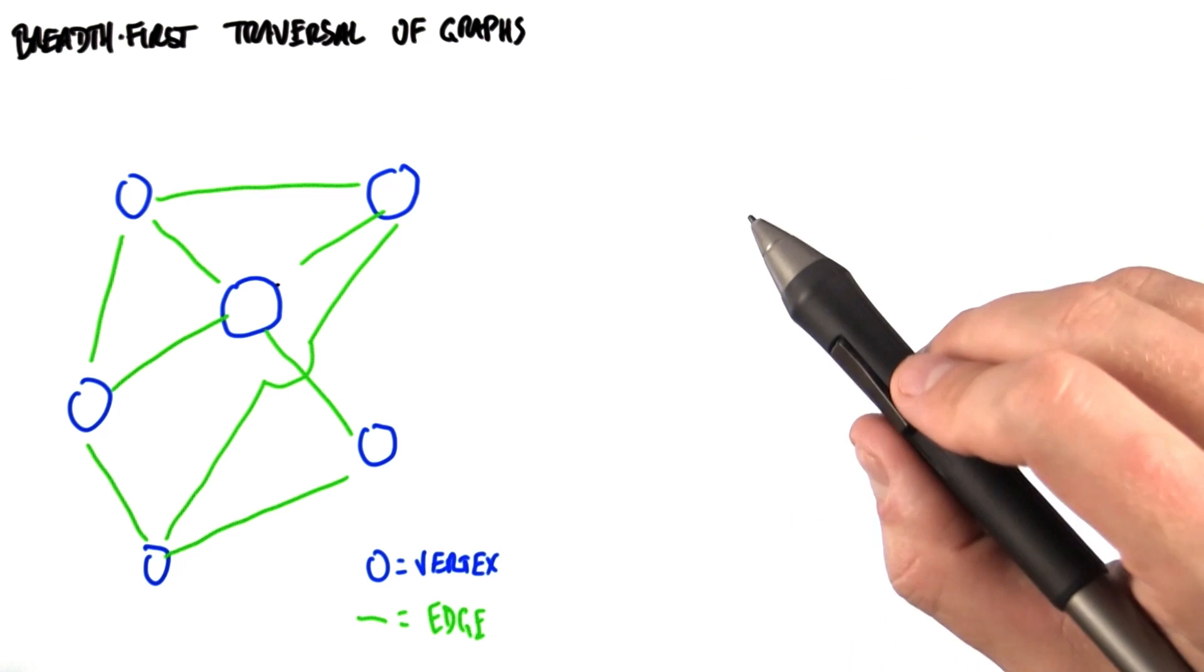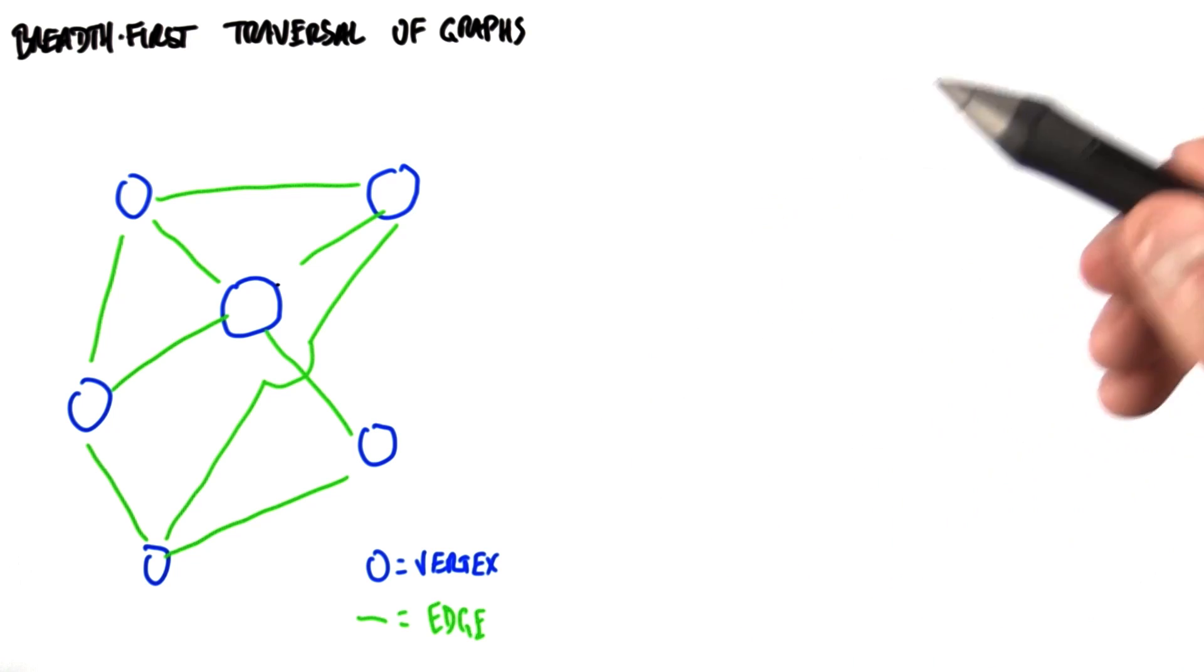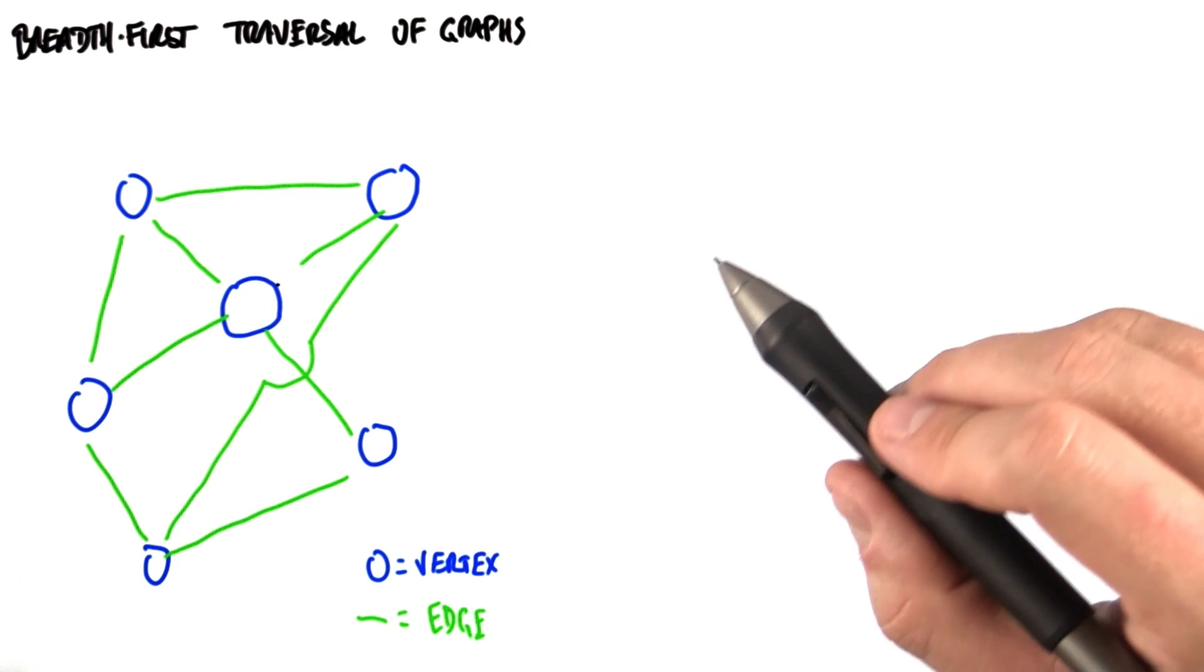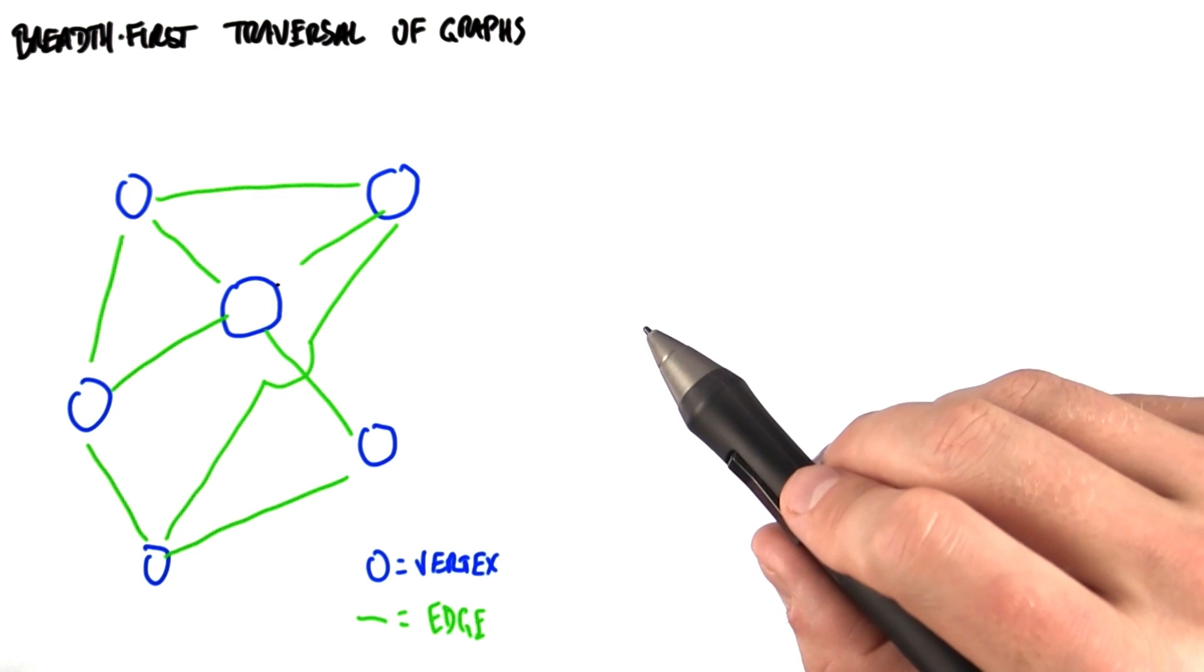Some graphs might be sparse with few edges per vertex. Some might be dense and have lots of edges per vertex. Large graphs, very large graphs, are an interesting recent topic of study.